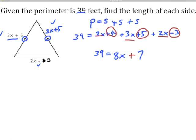Now we'll solve that equation. We'll subtract 7 from both sides, and then divide both sides by 8. We get that x equals 4.